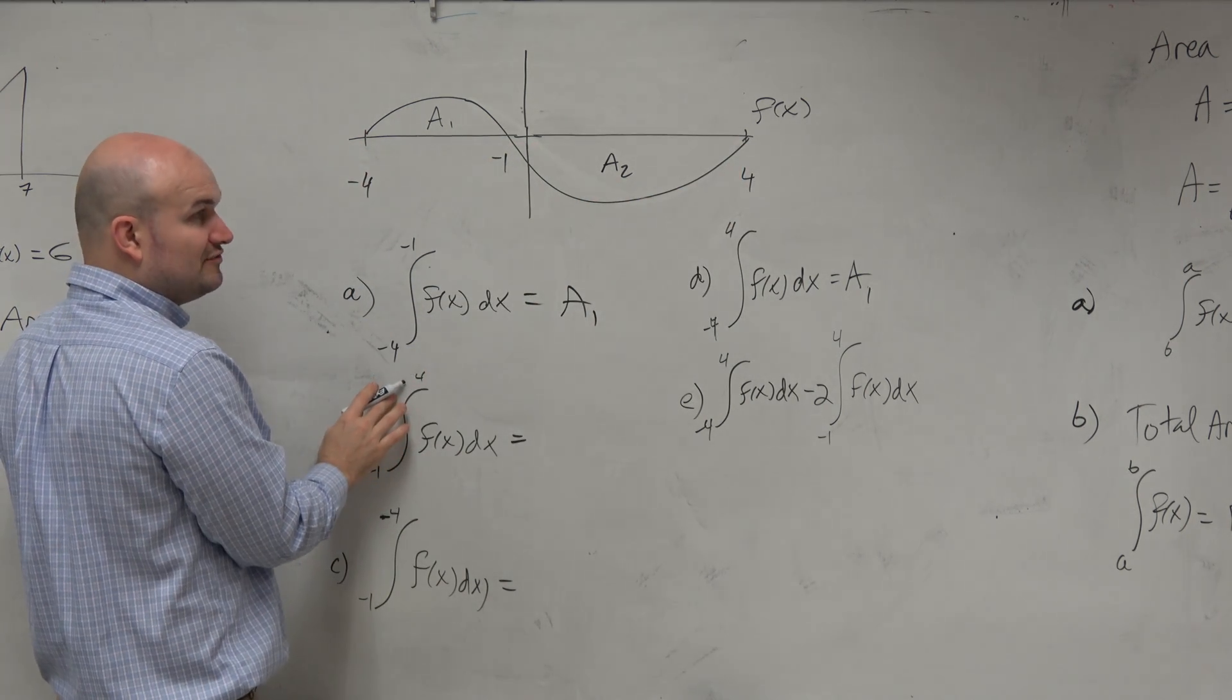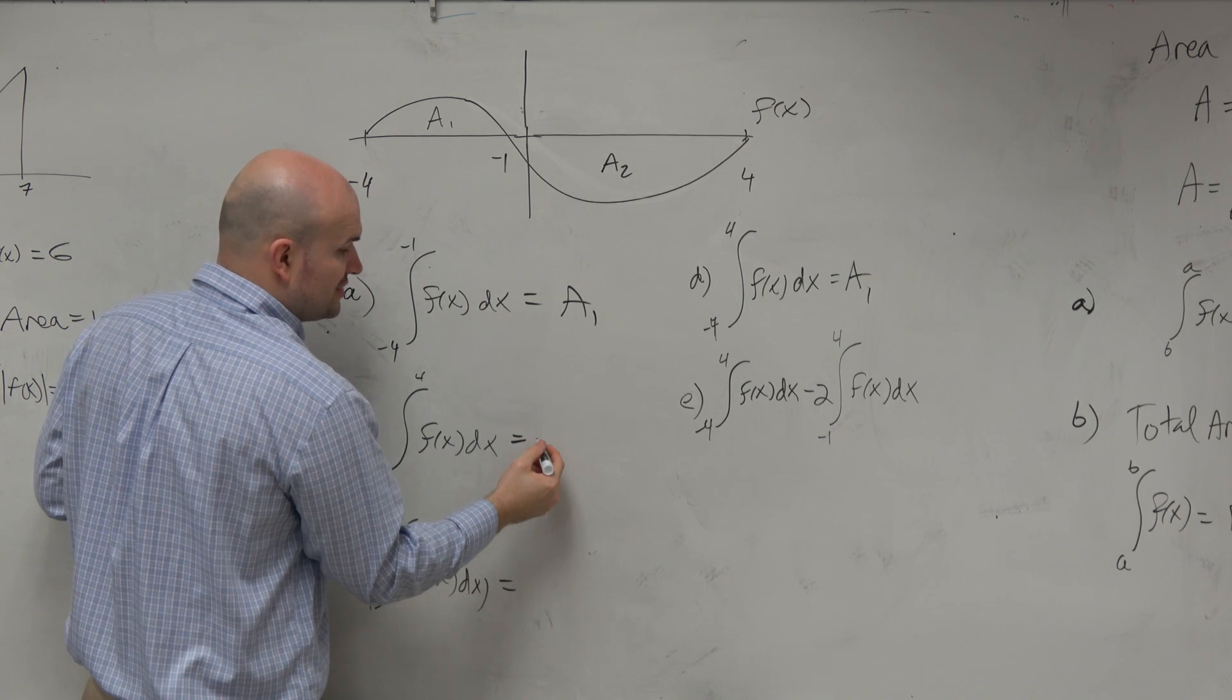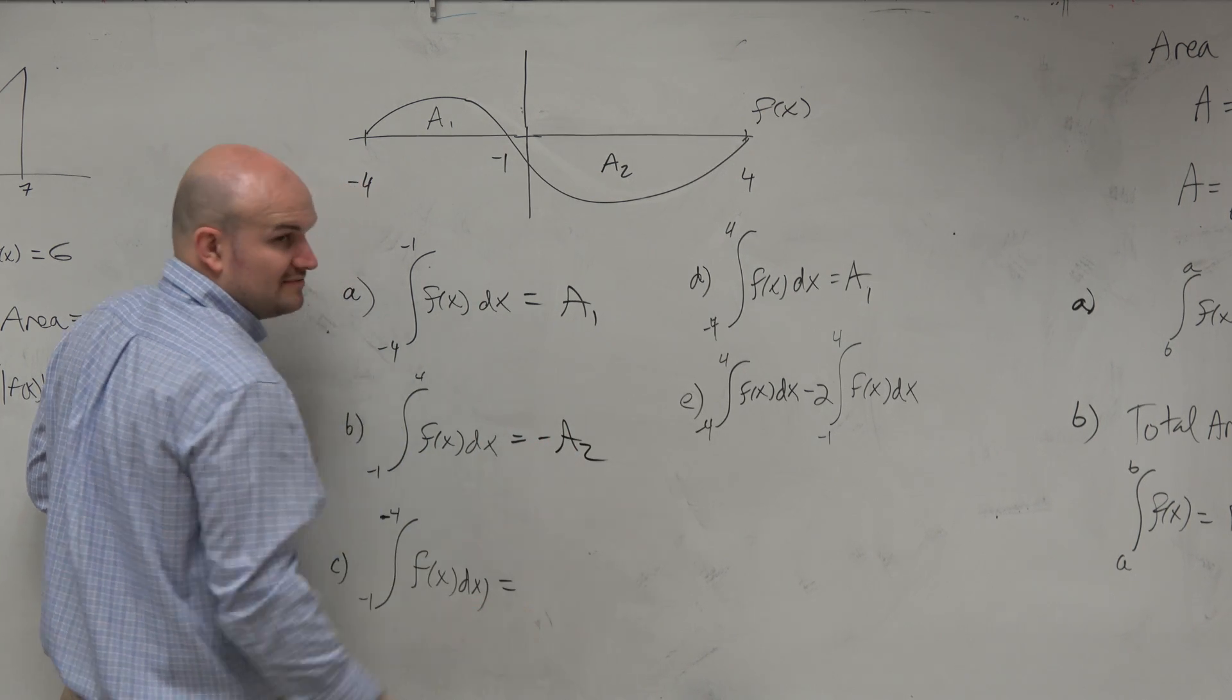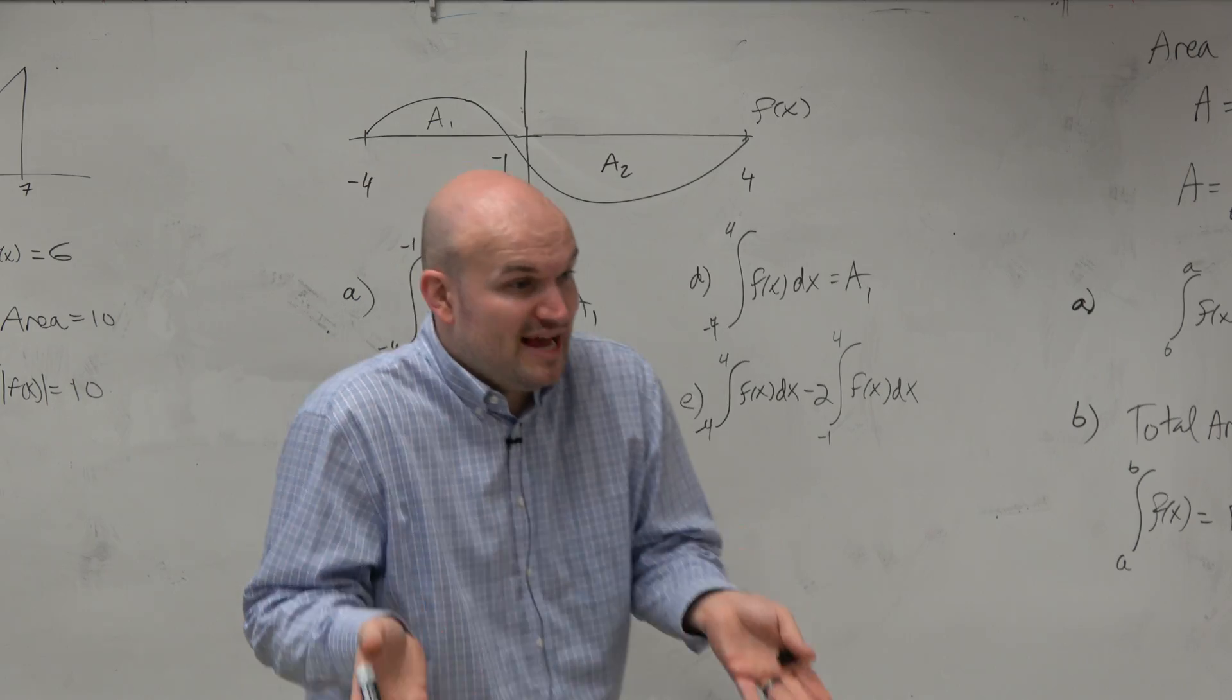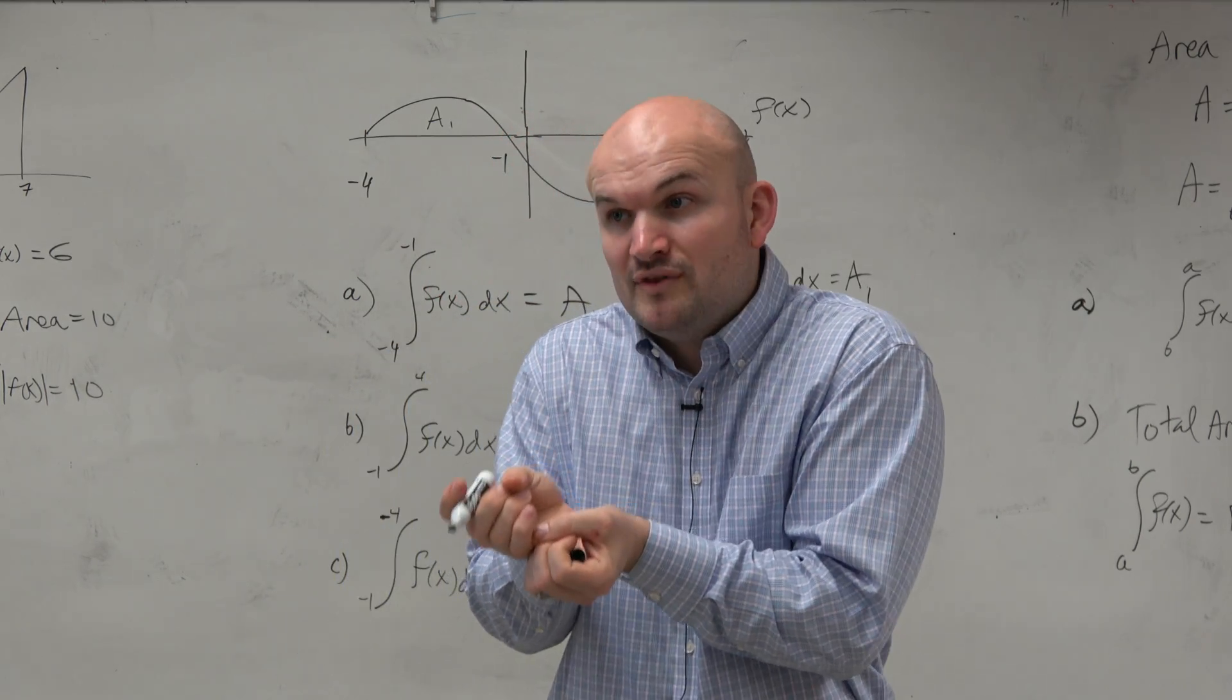So when we're doing from negative 1 to 4, this is actually going to be negative A2. Because it's giving you the area, and you're actually using the integral for that.